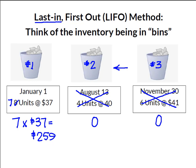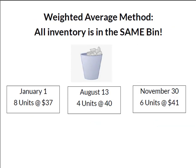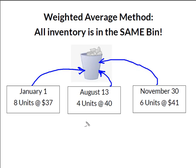The other option is to not track inventory in terms of when we acquire them, but just lump them all together — that's when we use a weighted average. In a weighted average method all of my inventory is dumped into the same bin. Units bought in January, August, and November all go into the same bin. I need to figure out my weighted average cost of inventory.